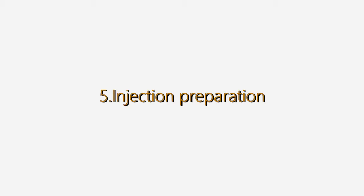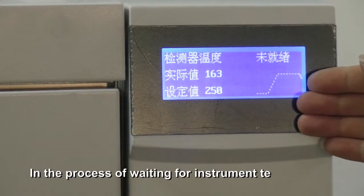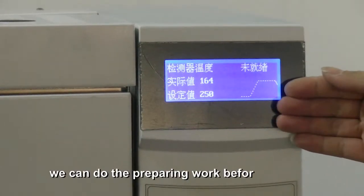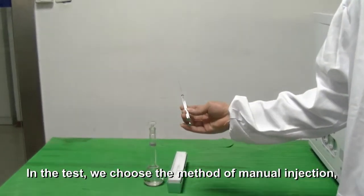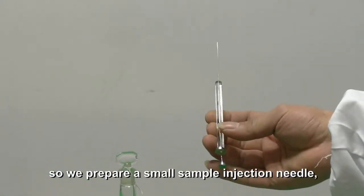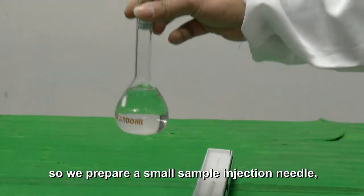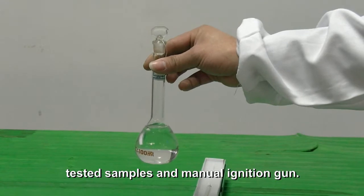Injection preparation. While waiting for instrument temperature, we can do the preparation work before injection. In the test, we choose manual injection, so we prepare a small sample injection needle, tested samples, and manual ignition gun.